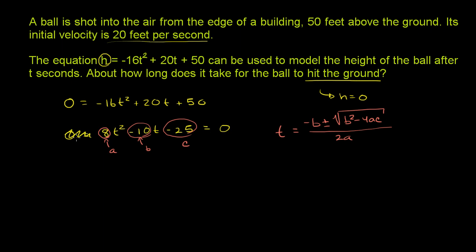So if we apply it, we get t is equal to negative b. b is negative 10, so negative negative 10 is going to be positive 10 plus or minus the square root of negative 10 squared. Well, that's just positive 100 minus 4 times a, which is 8, times c, which is negative 25. And all of that over 2a. a is 8, so 2 times 8 is 16.